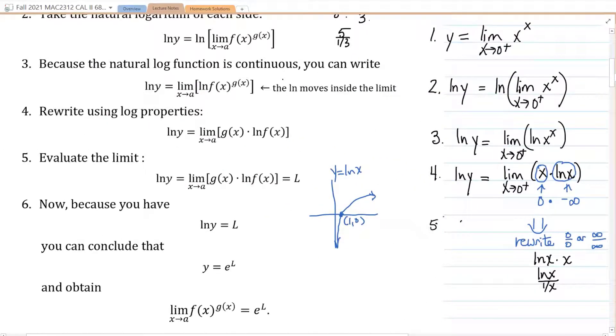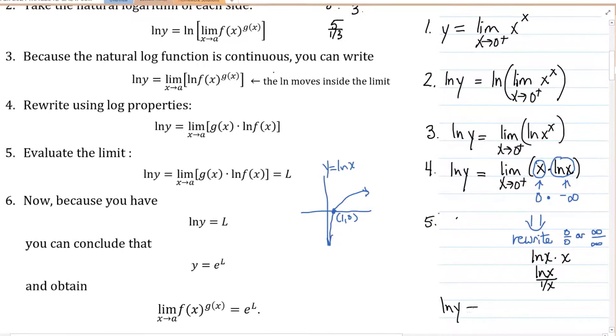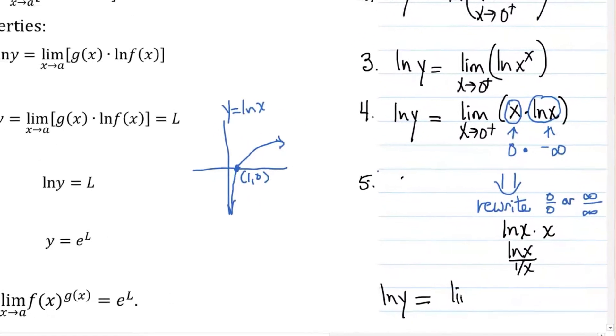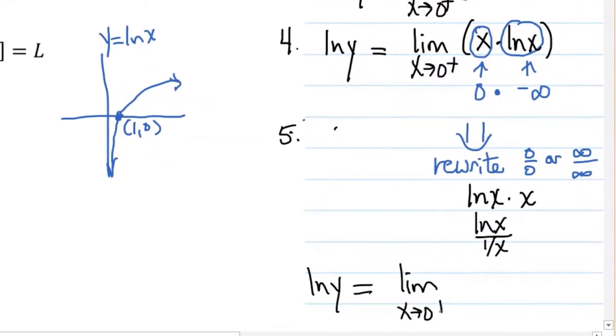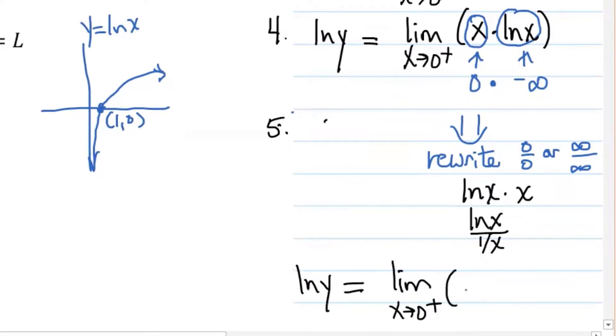So if we think of this as natural log of x times x, then we can take the natural log and divide it by the reciprocal of x. And that would still be the same thing. And by the way, this is step five, evaluating the limit.